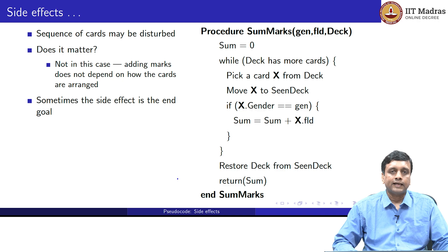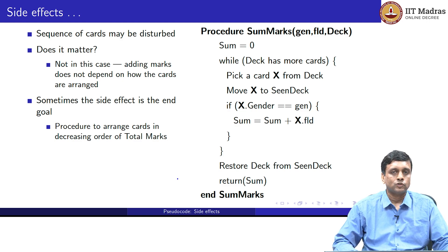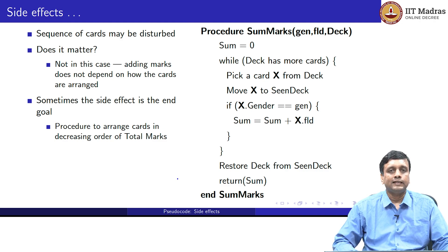Sometimes, on the other hand, the side effect is really what we want to achieve. For example, supposing we wanted to arrange the cards in ascending or descending order — say, in decreasing order of total marks, with the highest mark first and so on. We might have a procedure which takes the cards in some arbitrary order and gives them back neatly arranged. Here, the goal is actually to rearrange the cards — it does not have to compute any value, but just give back the deck in a prescribed order different from the order we gave.